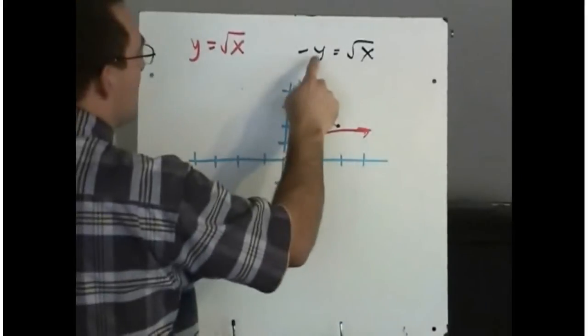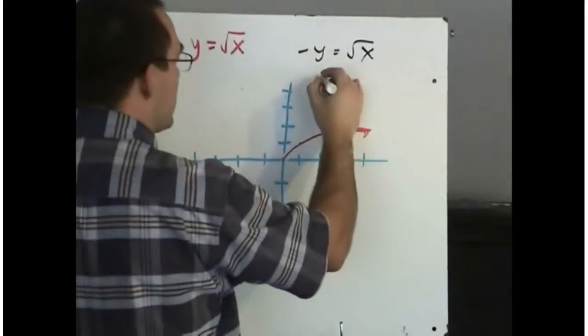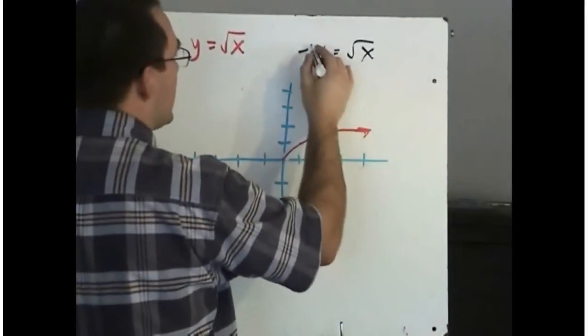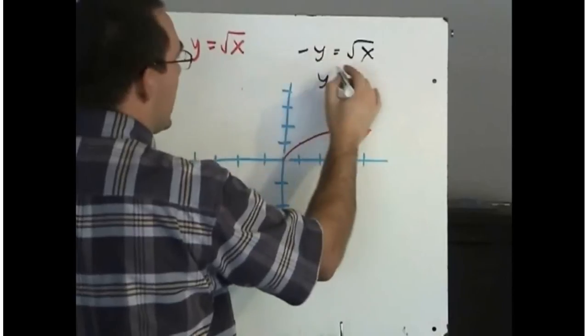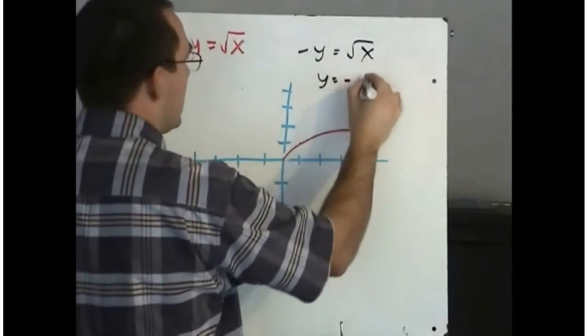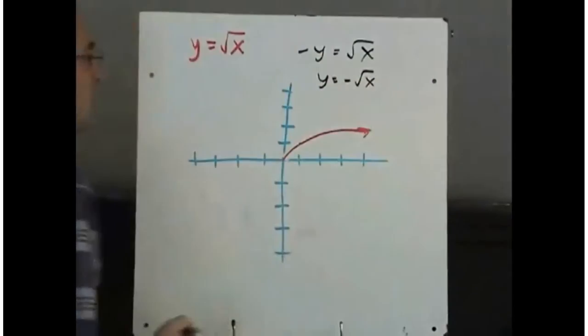Again, we've got this problem. We can't enter it like that in the calculator. So what we've got to do is, this is like a minus 1 here, so divide everything by minus 1. Means the function looks like this.